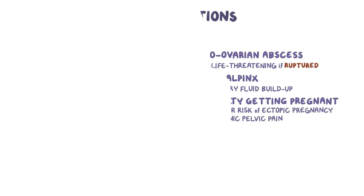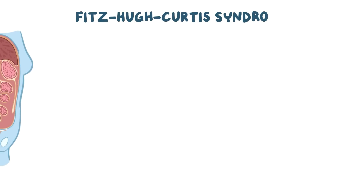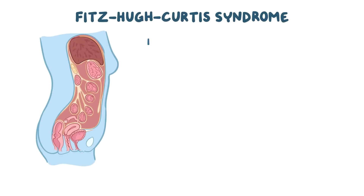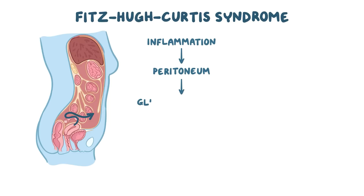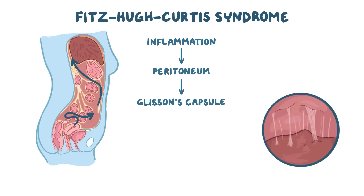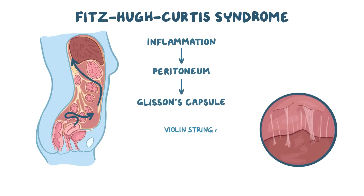One last complication is Fitzhugh-Curtis syndrome, which occurs when the inflammation from PID spreads to the peritoneum, and from there to Glisson's capsule, which surrounds the liver. This results in violin string adhesions — thin strings of scar tissue that attach the liver to the peritoneum.